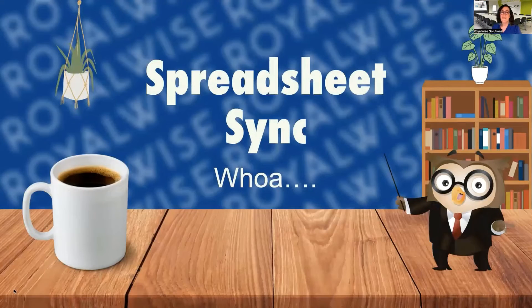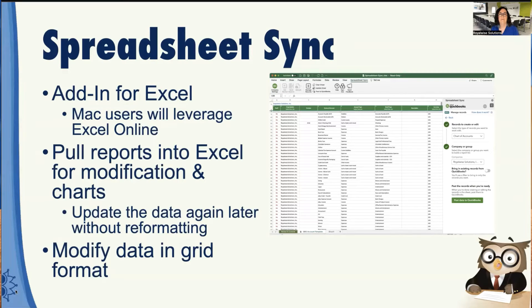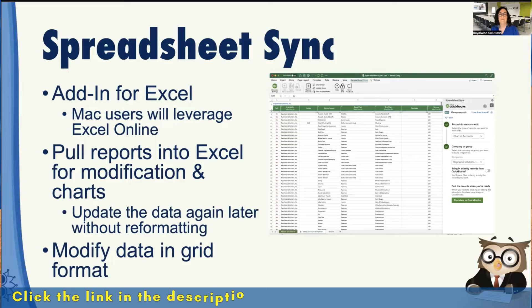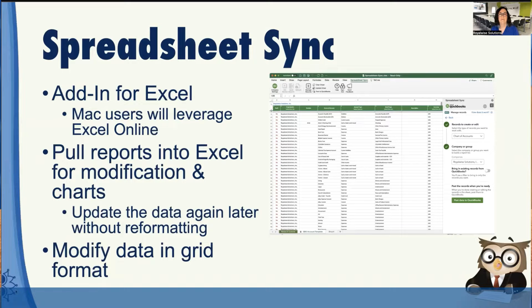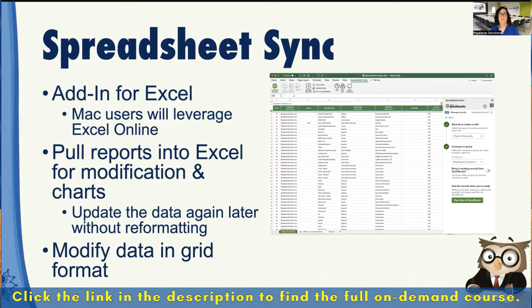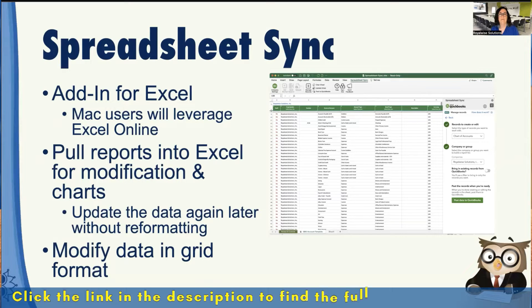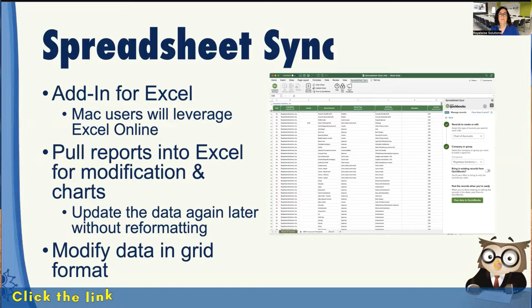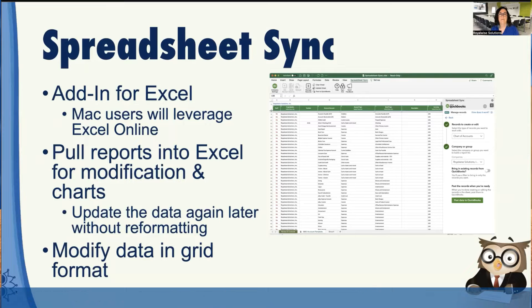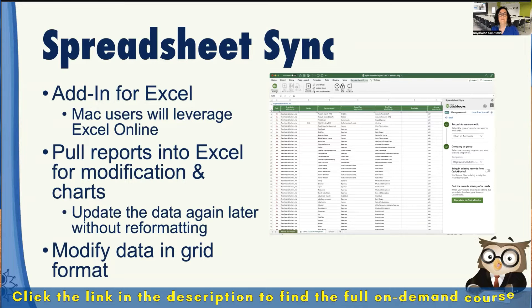This next feature I'm going to show you — for me it's worth upgrading most of my clients up to Advanced — and that is Spreadsheet Sync. What this allows you to do is connect your QuickBooks Online Advanced to Excel so that you can manipulate data in a grid. For example, you could export your P&L into Excel, move things around, make charts, add calculations, do some formatting, and then save the spreadsheet and it will maintain a live synchronization so you can get your current numbers from time to time.